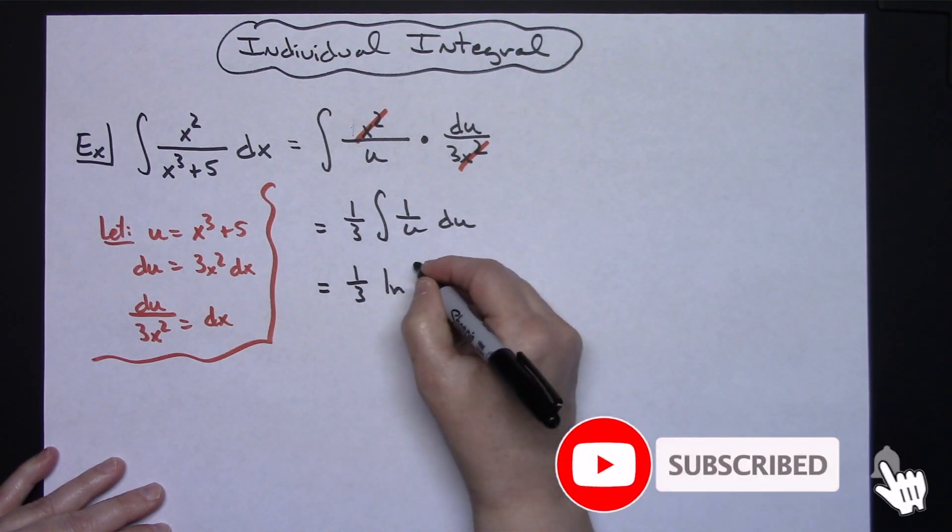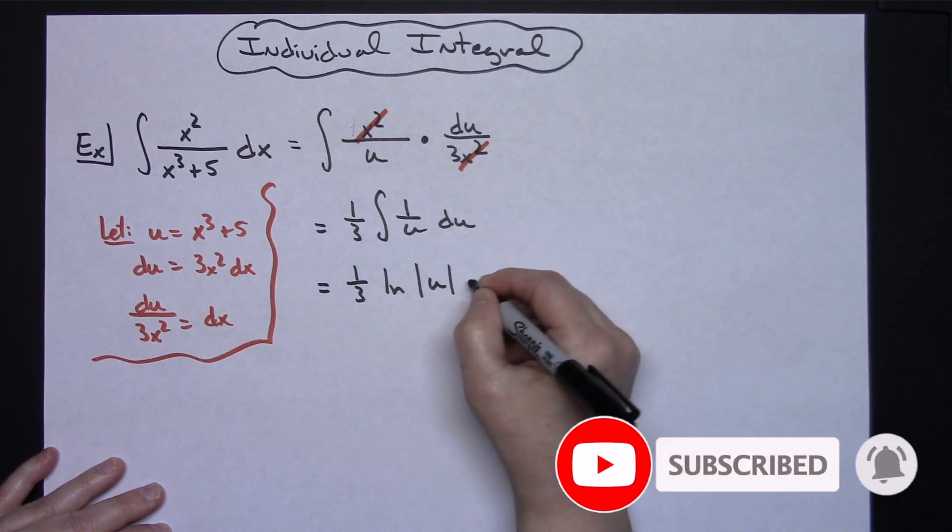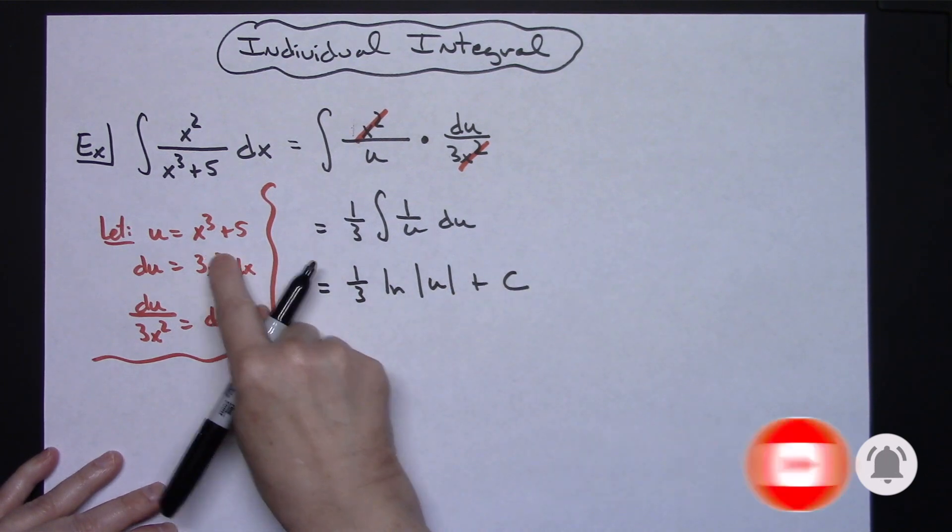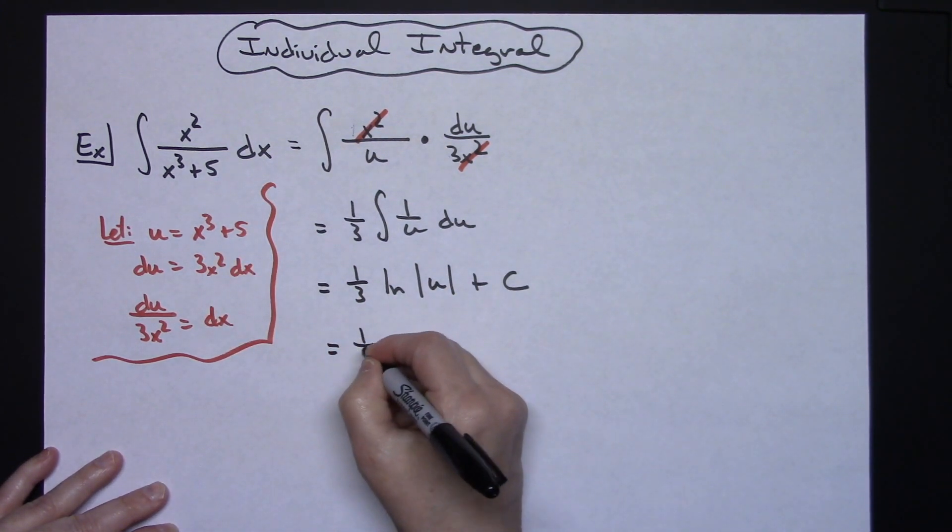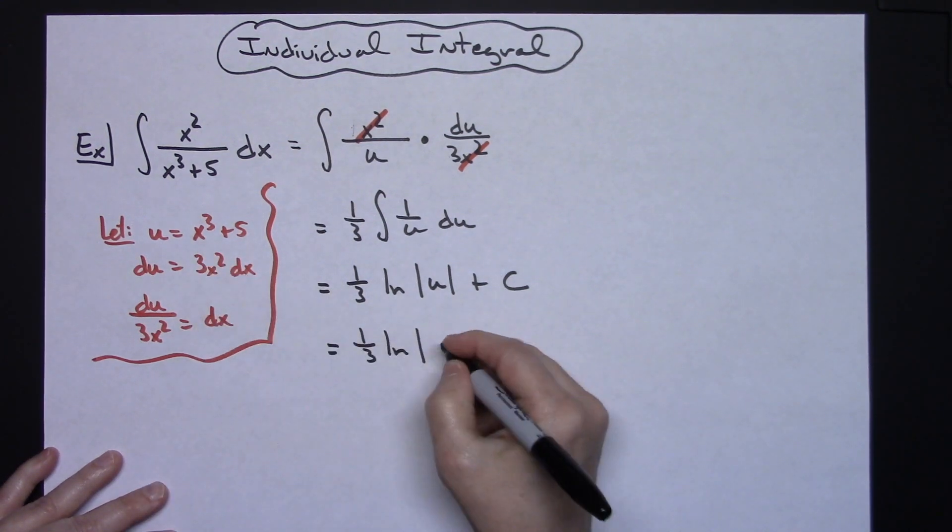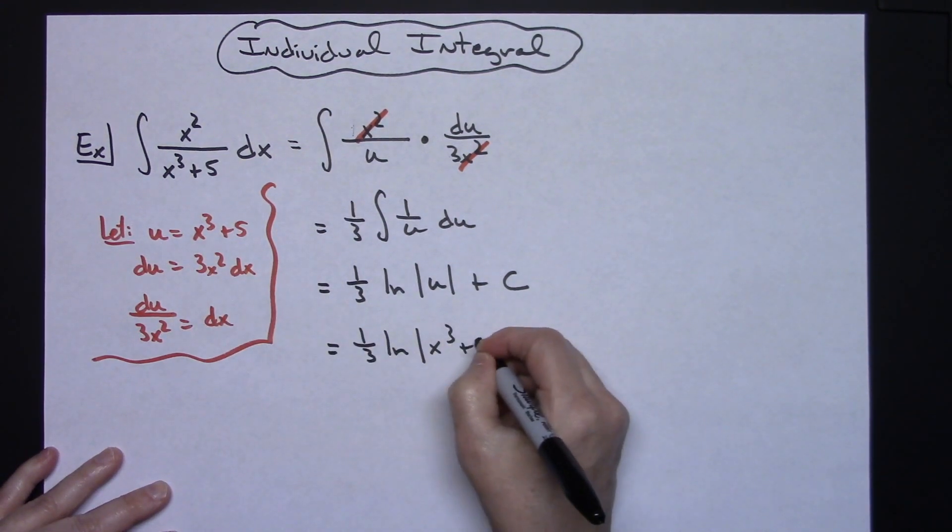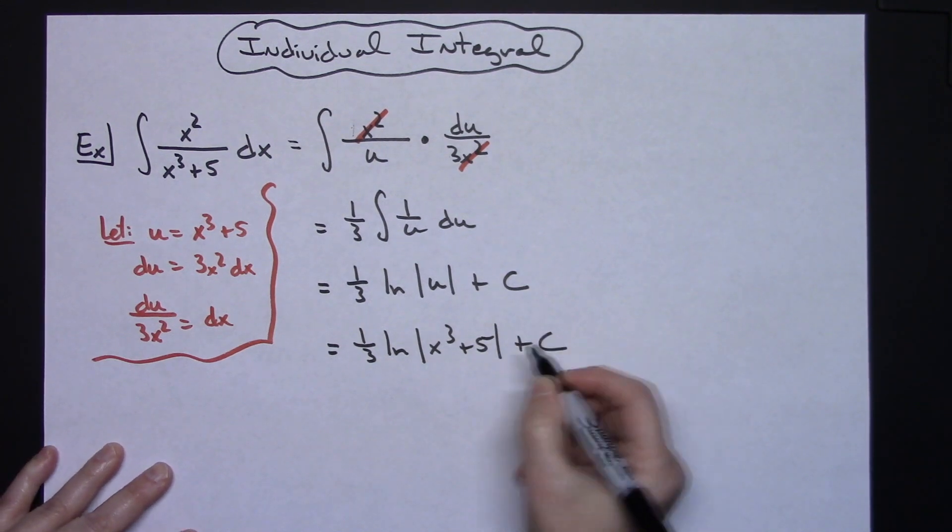One-third natural log absolute value of u plus C. And as a final step you replace your u with what you originally said it was going to be equal to.